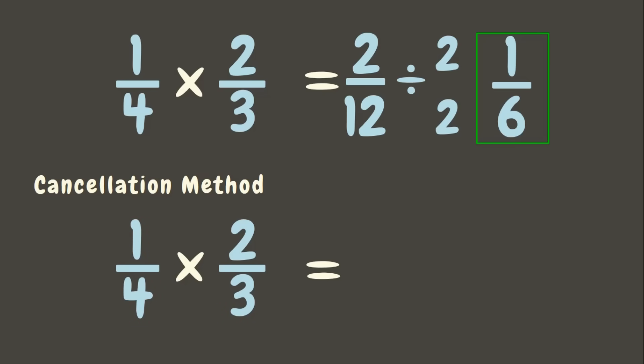Meaning, we are going to look for a numerator and a denominator which have a common factor. Here, we can see that 2 and 4 have a common factor of 2. Therefore, we can divide each of them by 2. 4 divided by 2 is 2, while 2 divided by 2 is 1.